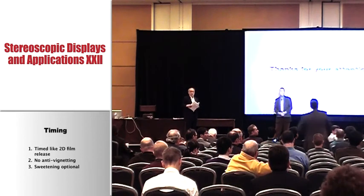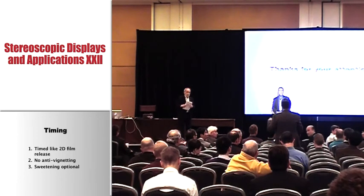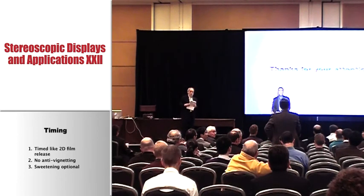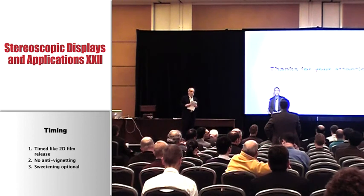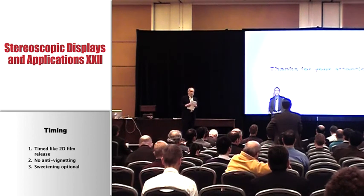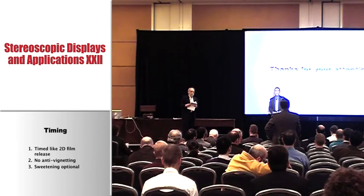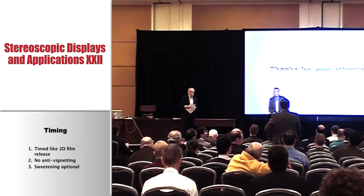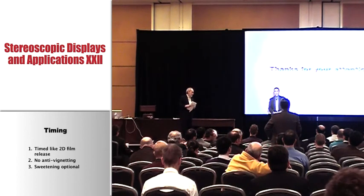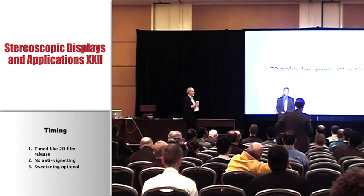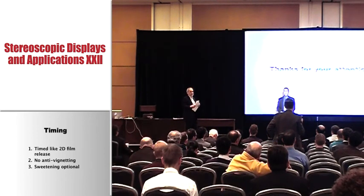Question: I counted three reflections off the mirrors — how is left-right handedness preserved with three reflections? Answer: It would be a lot to explain now, but it does work — it turns everything back around, rotates the image through 90 degrees, and does what it needs to do.